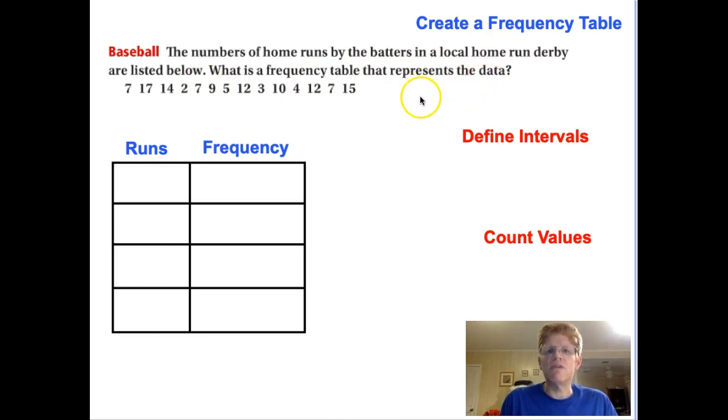So the first thing that we want to do is define our intervals. We want to find out how many intervals we need. To do that, we need to find what the min and the max values are. In our case, the minimum value here is 2, and it appears that the maximum value is going to be 17. So all of our values are going to fall between 2 and 17.